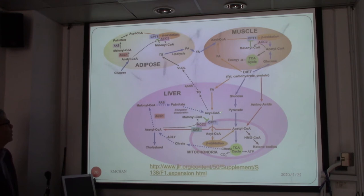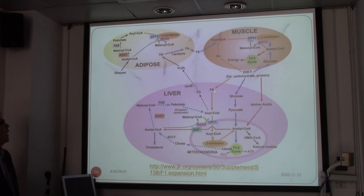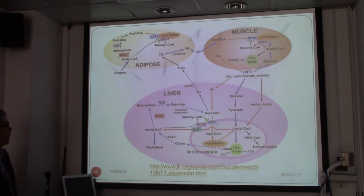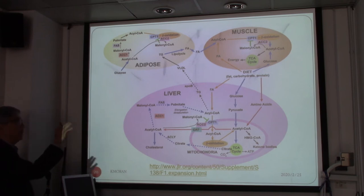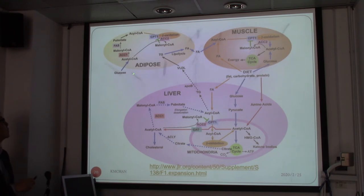Fat uptake in the liver involves LDL receptors. To make a long story short, fatty acids are available inside the cell — if we need to store them, we store them in adipose tissue; if we don't store them, we use them via beta oxidation to produce ATP energy. This picture links the three tissues: adipose, muscle, and liver.